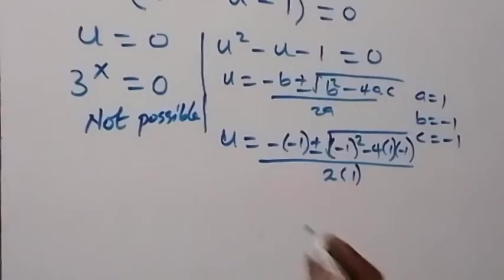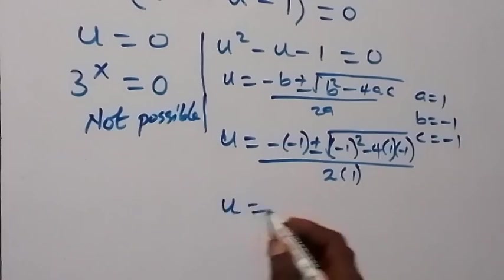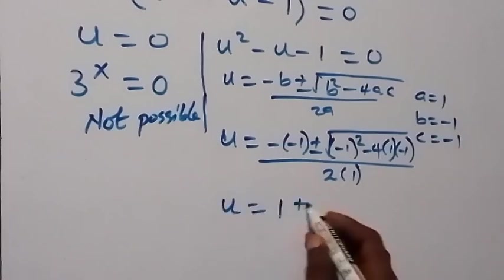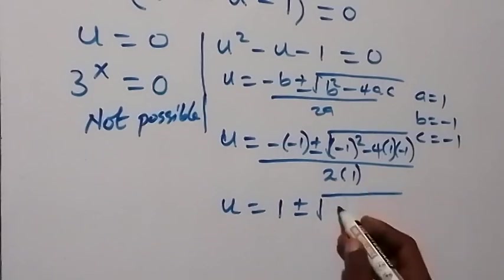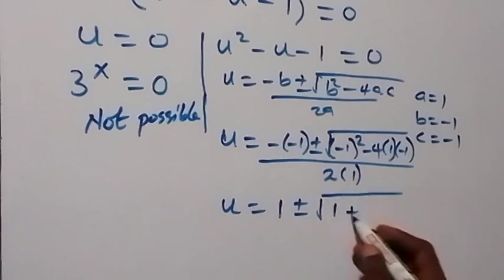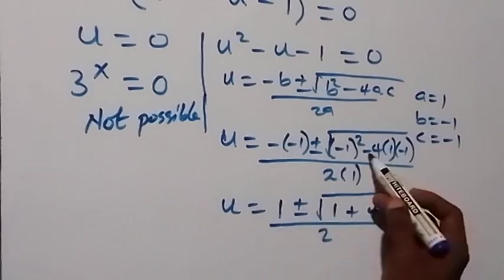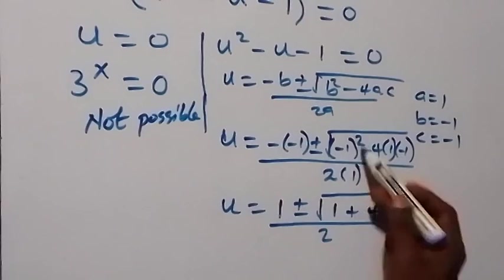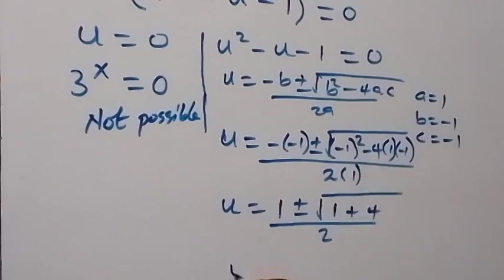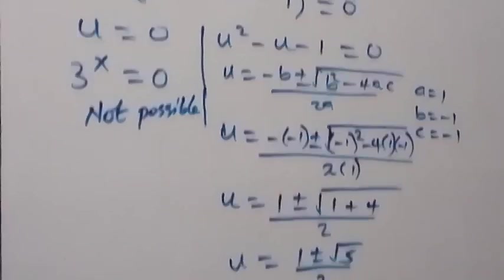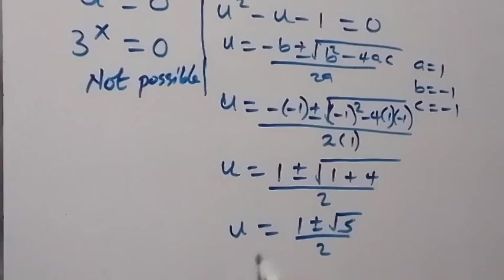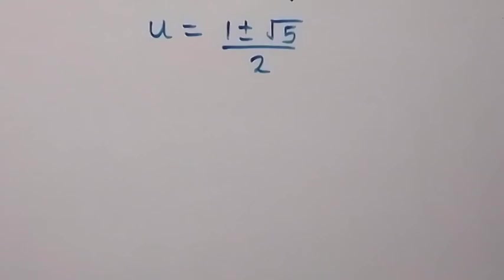Simplifying, this gives u equal to 1 plus or minus square root of 1 plus 4, over 2. Since negative times negative is positive, and negative 1 squared is 1, we get u equals 1 plus or minus root 5, over 2.